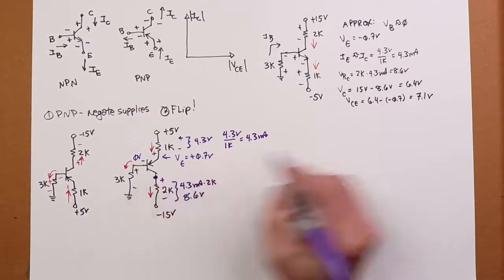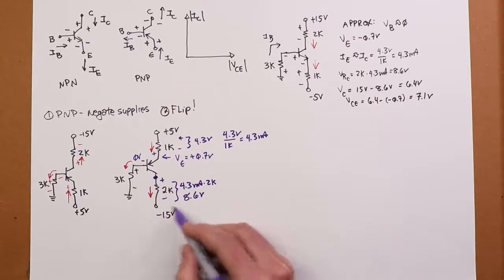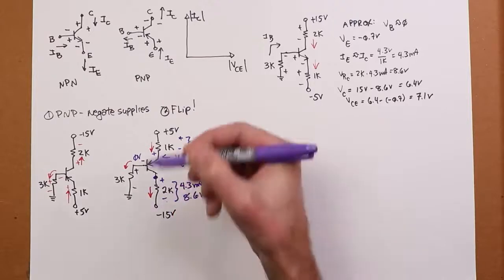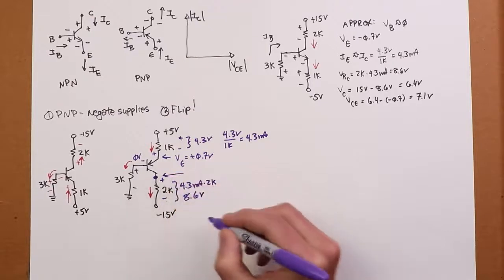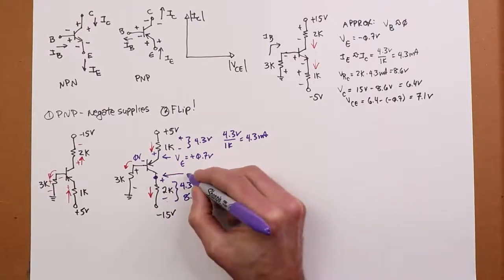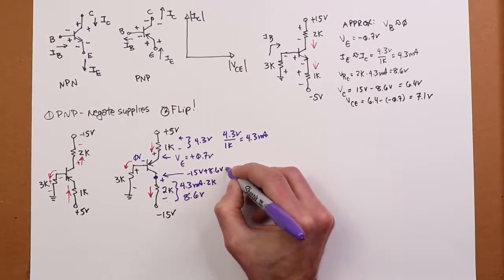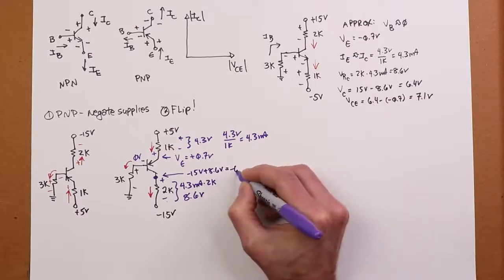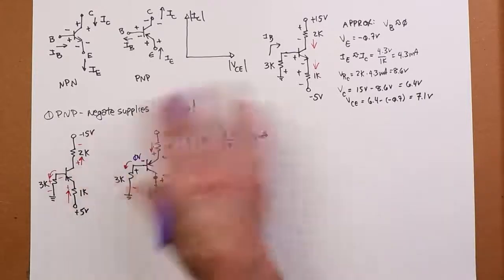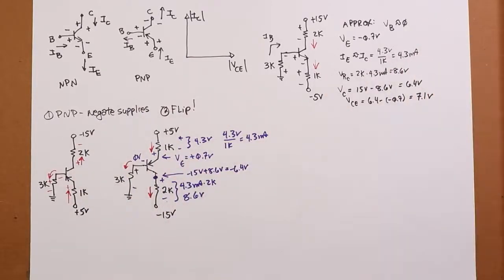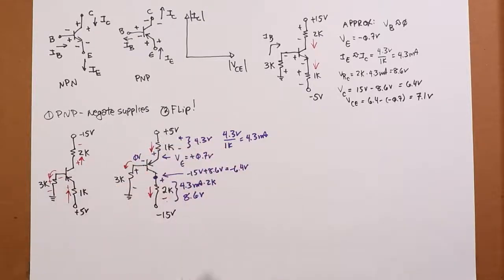4.3 volts over 1k. And I can take that 4.3 volts, and I can pass it through the 2k. And that's still going to get me 8.6 volts. Now, your collector, of course, is not going to be 6.4 volts. It's going to be negative, because you're going from negative 15 minus to plus. You're going to rise 8.6. So your collector voltage is minus 15 plus 8.6, which is going to get you negative 6.4 volts. But, there it is. The similarity is spot on. Everything, like I said, you just sort of flip this thing and the signs change.